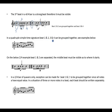Beat 1 and 2 can be grouped together, beat 3 is visible where it starts, and beat 3 and 4 are grouped together. Below is another example where beat 1 and 2 are separated — the middle beat must be visible as to where it starts. In the correct example, all beats are separated, whereas the incorrect example has all beats grouped together.